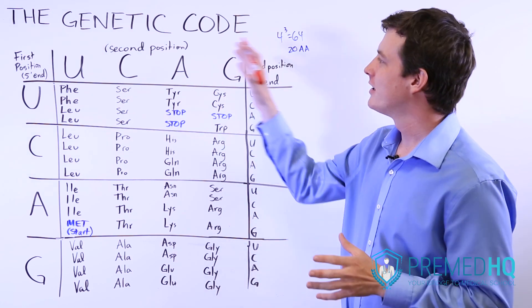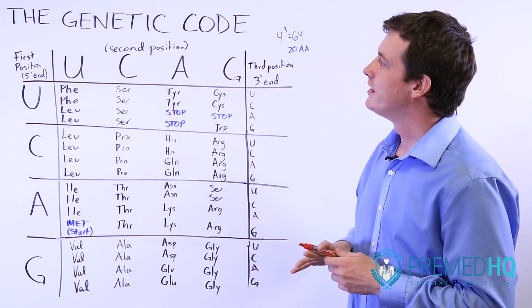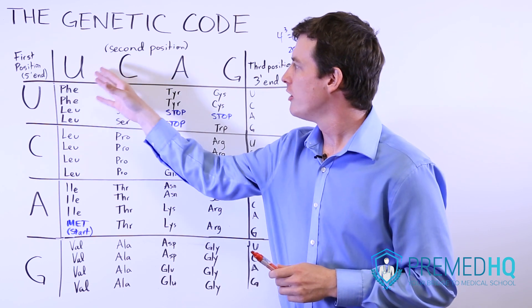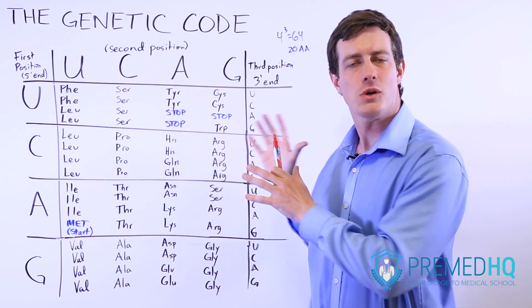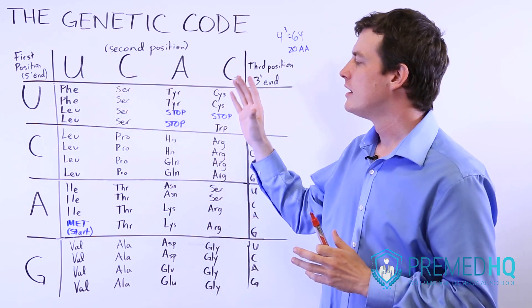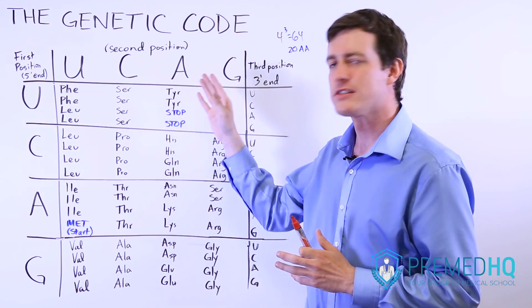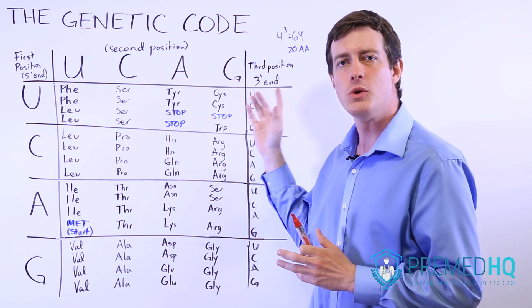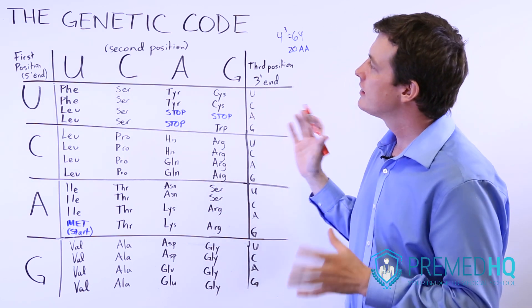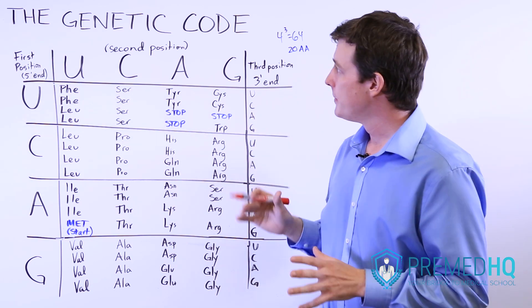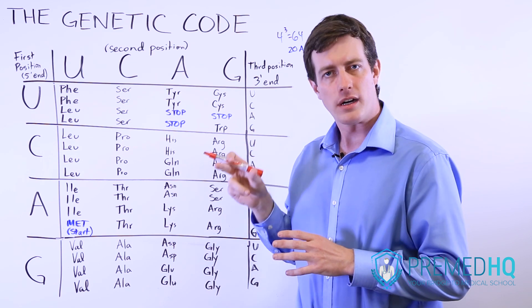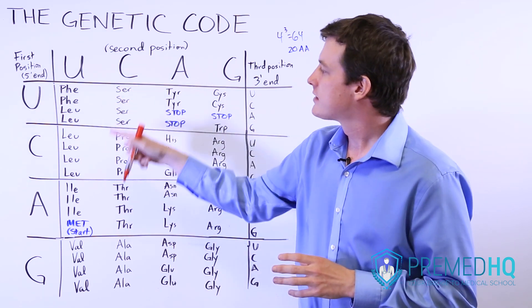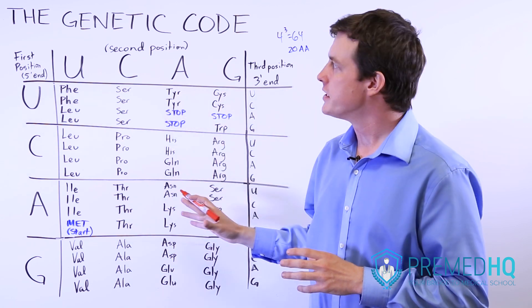This is the genetic code that translates a set of three RNA bases into amino acids, and it forms the third part of the central dogma, which is translation of RNA to protein. The way that the genetic code is set up is that each codon, which is a unit of three bases, represents some amino acid sequence.